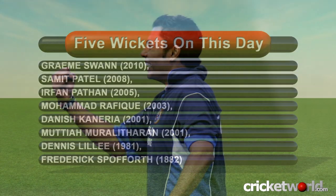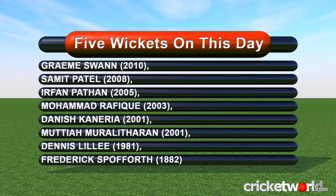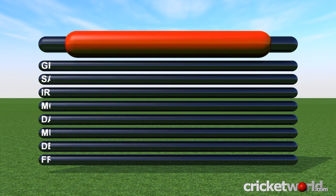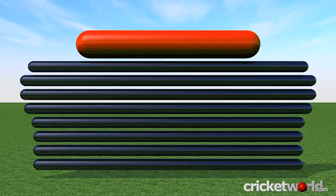In 2001, Danish Canary, a Pakistan leg spinner, took 6 for 42 against Bangladesh in the Asian Test Championship in Multan. Pakistan won that one by an innings and 264 runs.